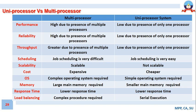Starting with performance: since multiprocessor systems have more than one processor, these processors are capable of collectively performing tasks at a faster speed. So performance of a multiprocessor system is very high. Likewise, performance of a uniprocessor system is considerably low due to the presence of only one processor, which can execute only one task at a time, so all tasks must be arranged sequentially.